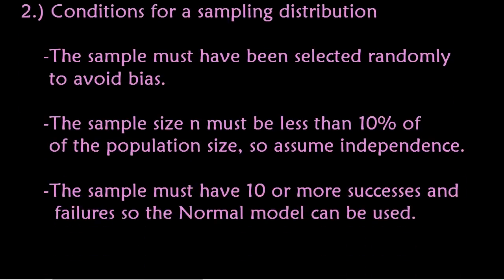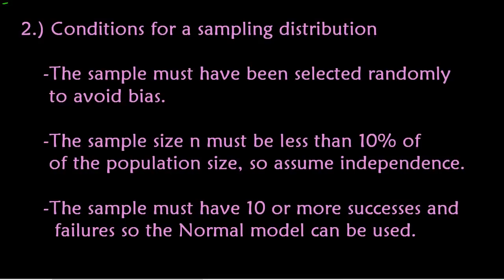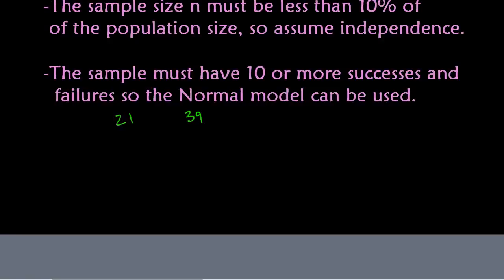Step two: the conditions. To build a sampling distribution, we need to check three conditions. First, the sample must have been selected randomly to avoid bias. Second, the sample of 60 Skittles must be less than 10% of the population — I did say it was a large batch — so that independence can be assumed. Third, the sample must have 10 or more successes and failures: we had 21 orange and 39 non-orange Skittles, both greater than 10, so the normal model can be used.